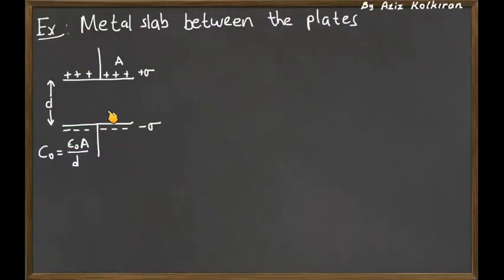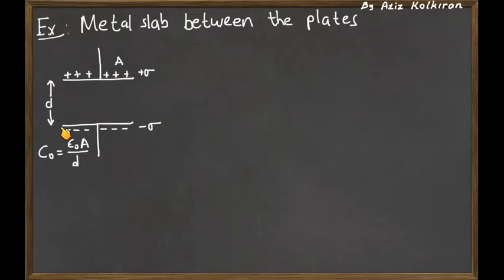We have a parallel plate capacitor with an air gap between the plates, with charge densities sigma plus and sigma minus, area A, and distance between the plates D. The capacitance is given by the simple expression epsilon_0 times the area of one of the plates divided by the distance between the plates.